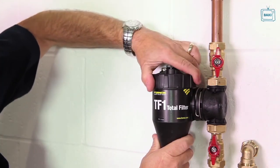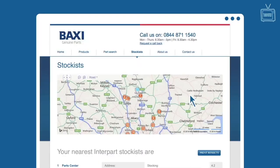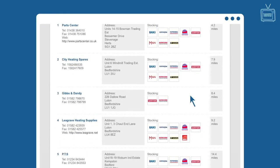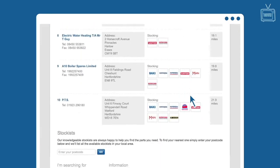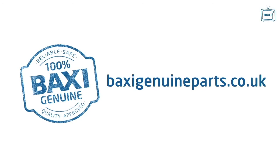You can check the Baxi Genuine Parts website to find your nearest stockist who can supply system cleaners, inhibitors and filters. Visit BaxiGenuineParts.co.uk for more details.